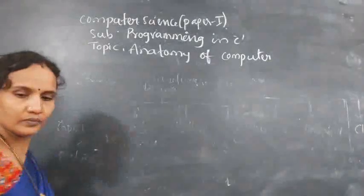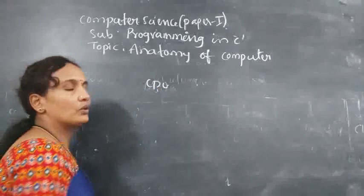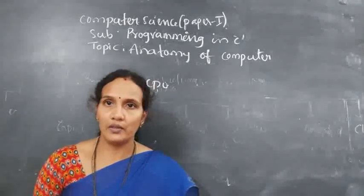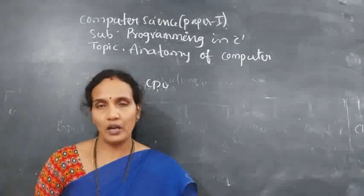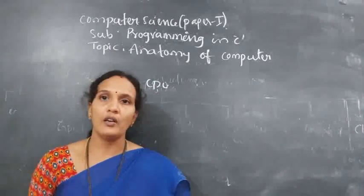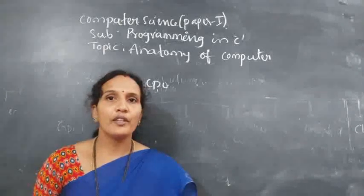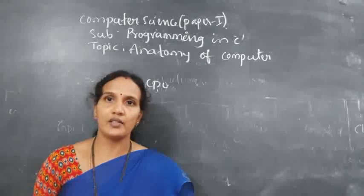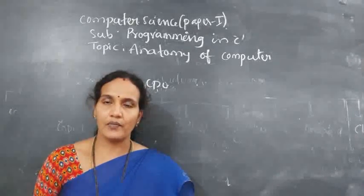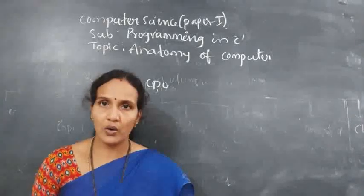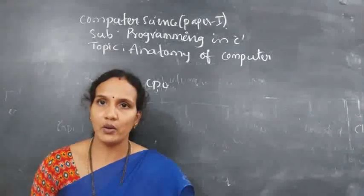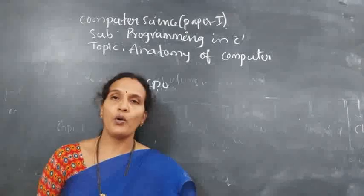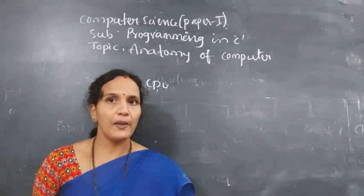Now come to CPU. CPU stands for Central Processing Unit. It is the brain of the computer. Without a brain, a human being will not work; similarly without a CPU, the system will not work. Whatever mathematical or logical instructions you give, all those instructions are performed by the CPU. That is why CPU is called the brain of the system.